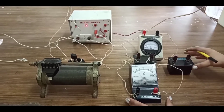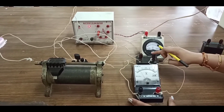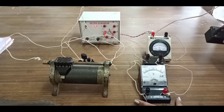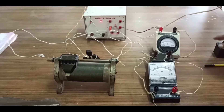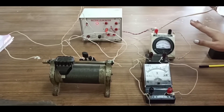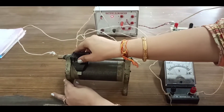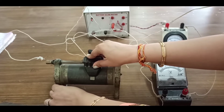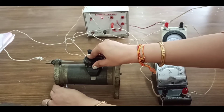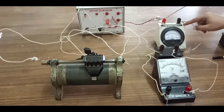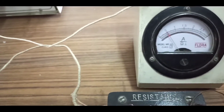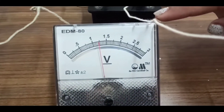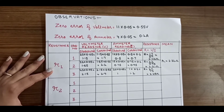Now let's do the next part of this activity, in which I have replaced my first resistor with another unknown resistor. To find out the resistance of this unknown resistor, I have made the arrangement in the same way as before. The least count and zero error of the voltmeter and ammeter remain the same. I will adjust the position of the rheostat so that the reading in the ammeter is 10 divisions and the corresponding reading in the voltmeter is 24 divisions.